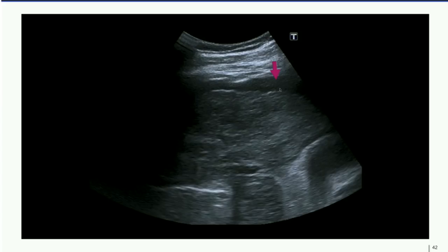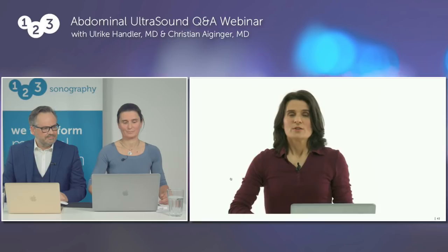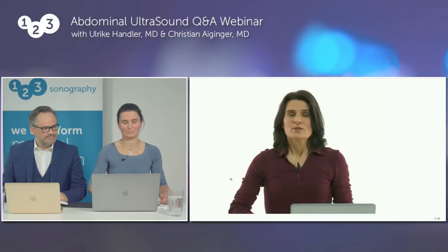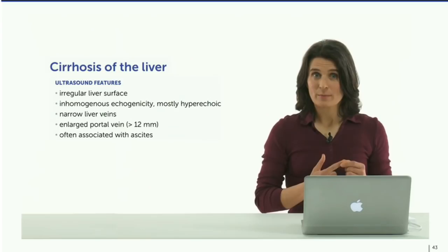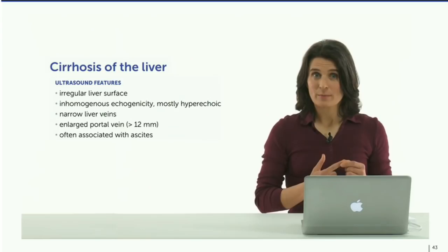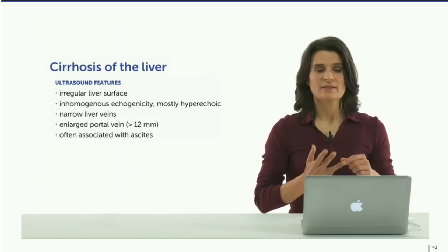Take a look at this small dark area — it's free fluid, pointing to ascites. This means the patient has already an advanced case of hepatic cirrhosis. Ultrasound features of liver cirrhosis: the humpy irregular liver surface compared to a normal smooth capsule, inhomogeneous echogenicity of the liver parenchyma, narrowed liver veins, and an enlarged portal vein due to portal hypertension. Advanced cirrhosis is associated with ascites.